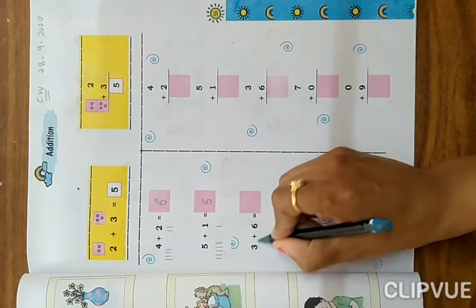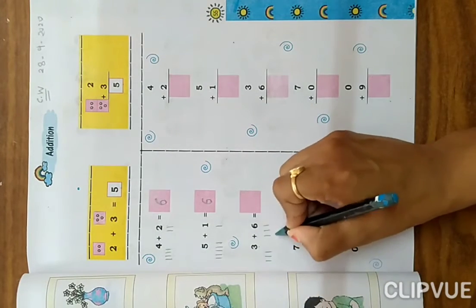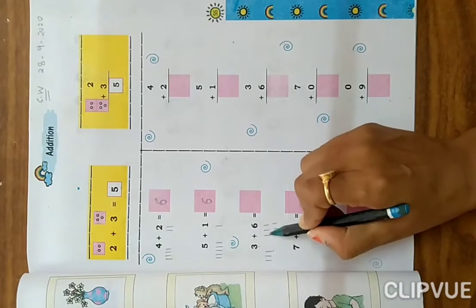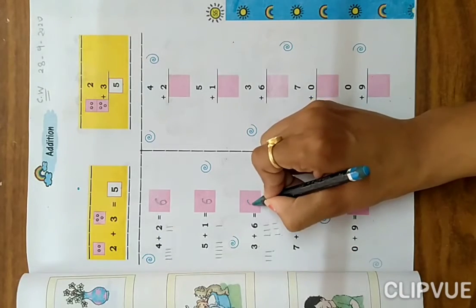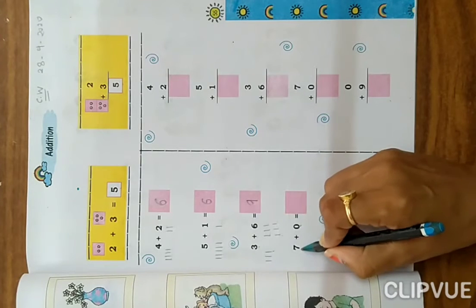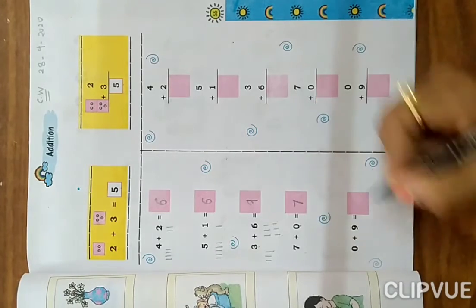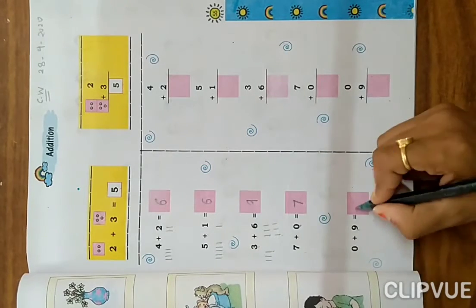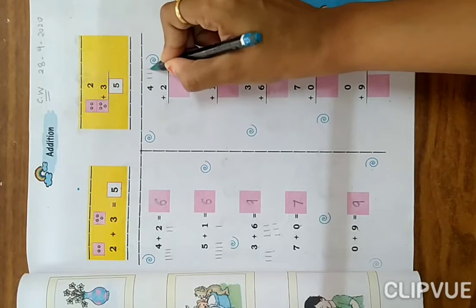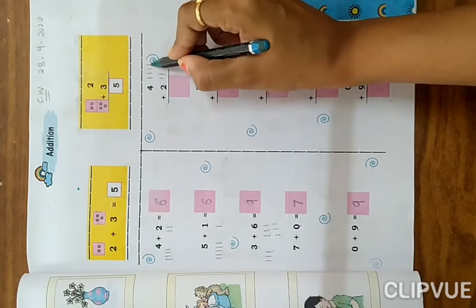3 plus 6, so one, two, three, and here one, two, three, four, five, and six. Count all together: one, two, three, four, five, six, seven, eight, nine. So write here 9. 7 plus 0, when we add 0 to any number, the answer is the same: 7. 0 plus 9 is 9.